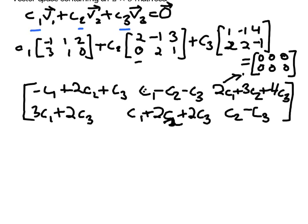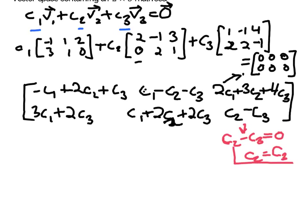To solve this, I'm going to go to the simplest equation first. The last entry gives C2 minus C3 equals 0, which means C2 is equal to C3. That's an important fact established.